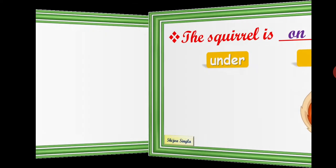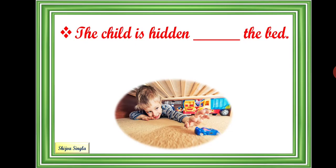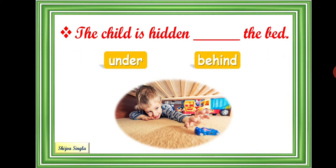Next is: the child is hidden dash the bed. Under or behind? So, the boy is below the surface of the bed. So, the preposition under will be used over here. The child is hidden under the bed.